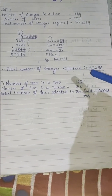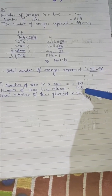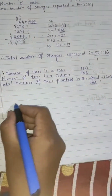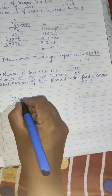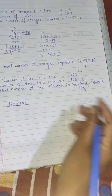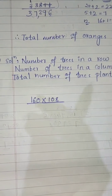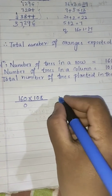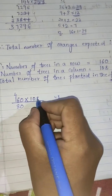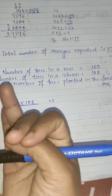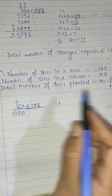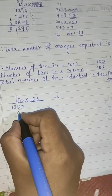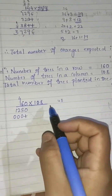Let's multiply 160 into 108. Start with the units digit 8: 8 zeros are 0, 8 sixes are 48 — write 8 and carry 4; 8 ones are 8, plus carry 4 is 12 — write the full 12 since there is no next digit. Now the tens digit is 0, so we start writing from the tens place: 0 times anything is 0, so write zeros for all positions.